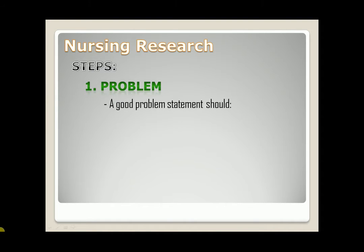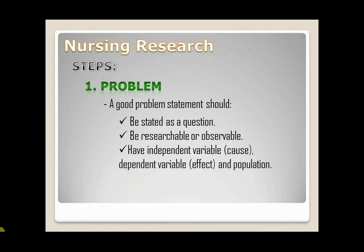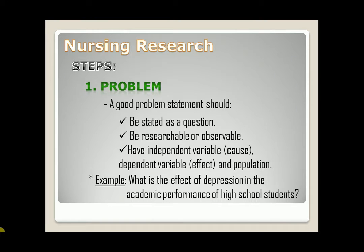A good problem statement should be stated as a question, be researchable or observable, and have an independent variable, dependent variable, and population. For example, what is the effect of depression on the academic performance of high school students? Depression is the independent variable, academic performance is the dependent variable, and high school student is the population. It is stated as a question and it is researchable.